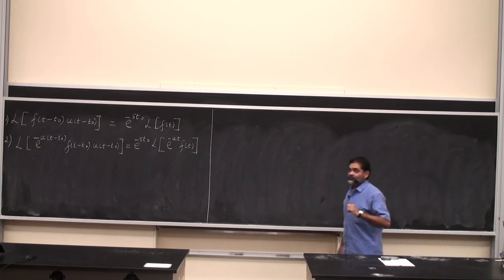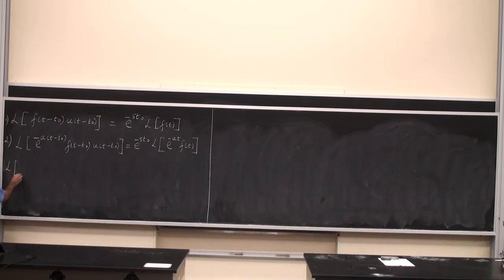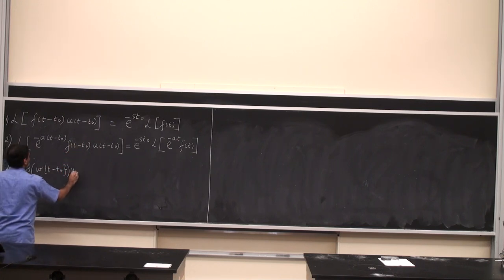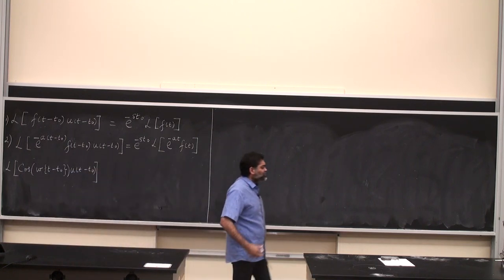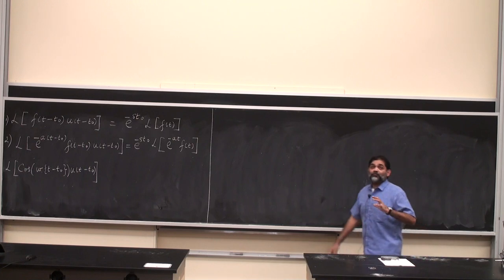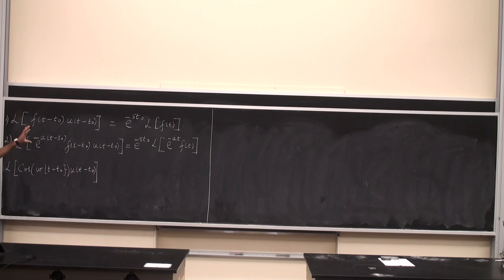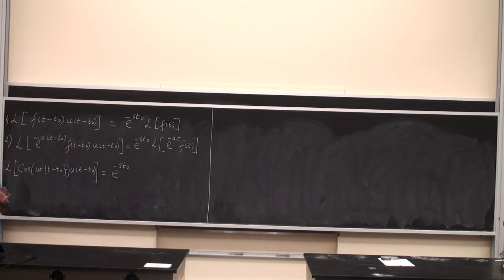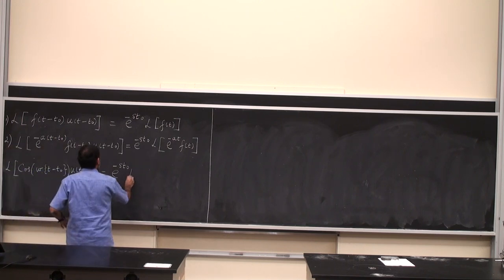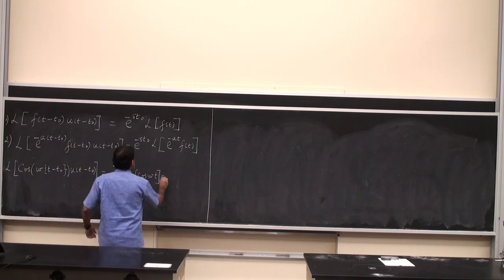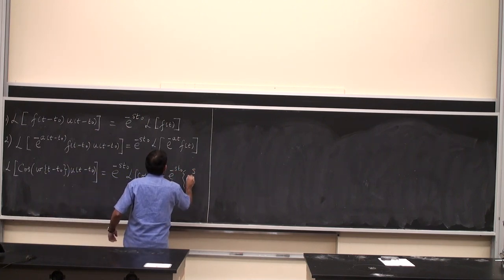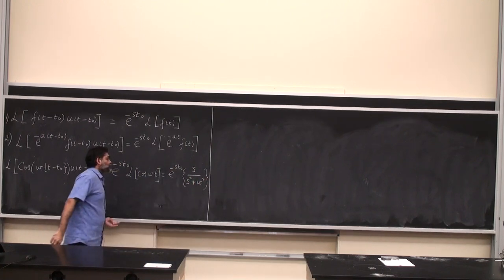A quick example: the Laplace of cosine(ω(t − t₀)) · u(t − t₀). Here ω is the frequency, and there is no phase shift on this wave. This is of the same form as formula one, so all you do is say this equals e^(−s·t₀) multiplied by the Laplace of cos(ωt), which is in the Laplace tables on Carmen. The result is e^(−s·t₀) · s/(s² + ω²).